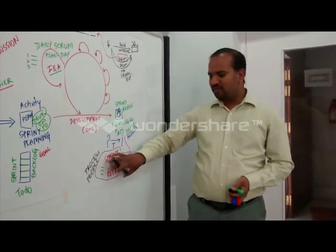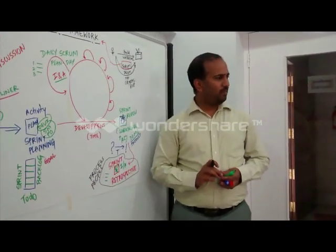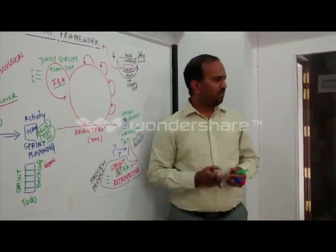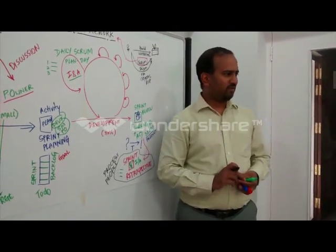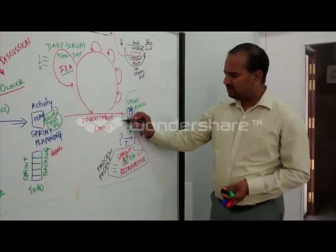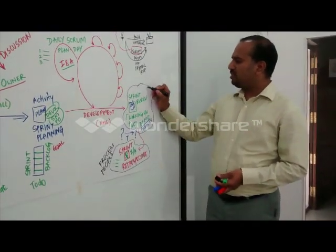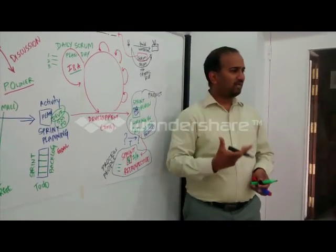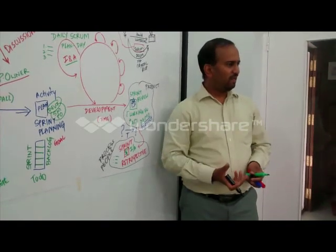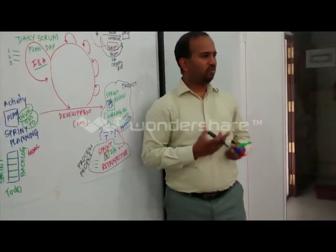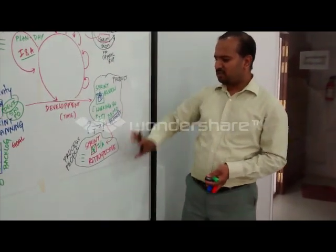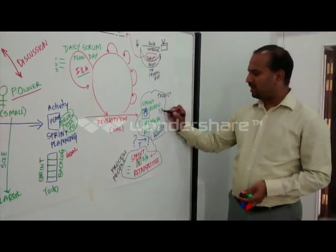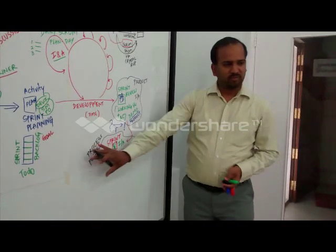When people come to the retrospective, they are only focusing on the process and the people — how to become more effective, how can the process become more efficient, how can I and the team become more effective. The sprint review is purely on the product — how to make the product better, higher quality, good value. So you have one inspect and adapt on the product and one inspect and adapt on the people and process.